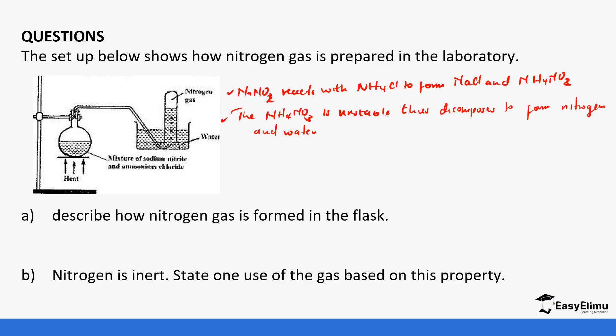State one use of the gas based on this property. So we said it is inert, so it can be used in refrigeration, especially in preserving semen in artificial insemination. We also said that nitrogen is used in canned food products to preserve that product. It prevents the reactions of oil with oxygen which causes rusting. So those are some of the uses of nitrogen. These are some of the questions in regards to nitrogen.